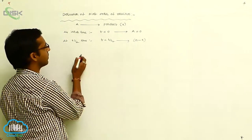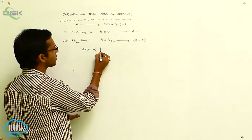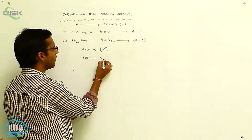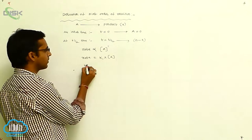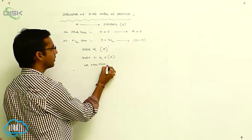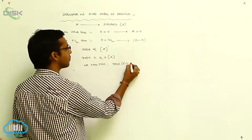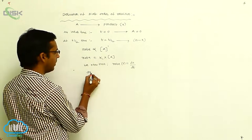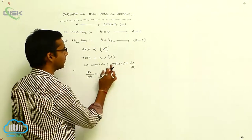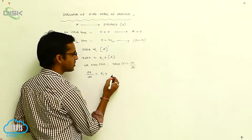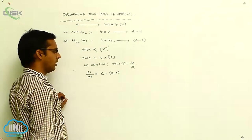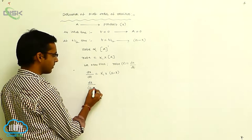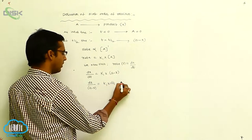Now, applying the order of reaction: the rate is directly proportional to concentration of reactant A with power 1. So, rate equals K1 into concentration of A. We know that rate R equals DX by DT. Therefore, DX by DT equals K1 into (A minus X), since after time T the reactant concentration is A minus X.